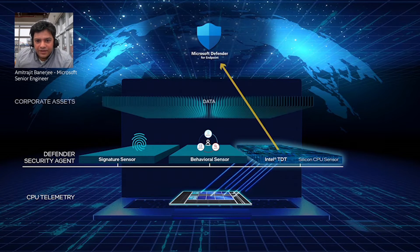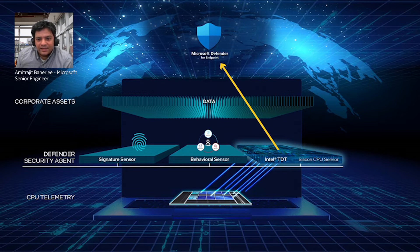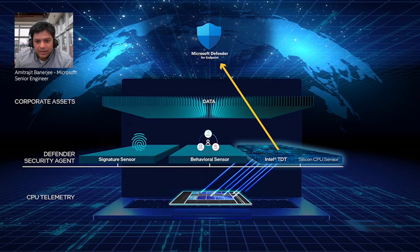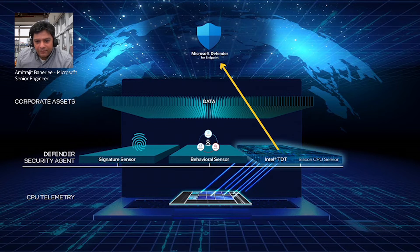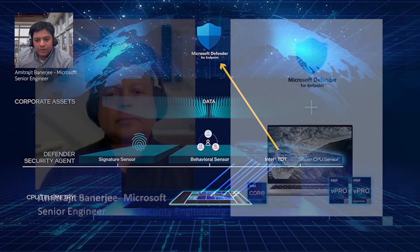Integration of Microsoft Defender for Endpoint with Intel TDT gives us the ability to read hardware security telemetry that can be used to profile ransomware as it executes on the CPU microarchitecture. This can give us another view into what's happening at the hardware layer that can augment our existing sensors. Since the signal comes exclusively from the utilization of the CPU caused by execution characteristics of malware, it is unaffected by common anti-malware evasion techniques such as binary obfuscation or memory-only payloads.